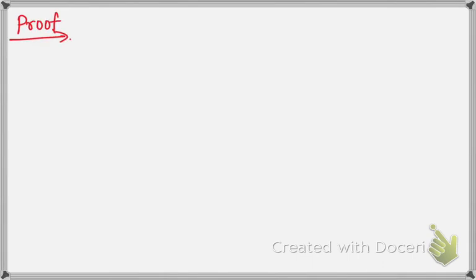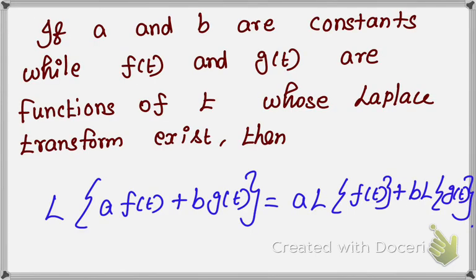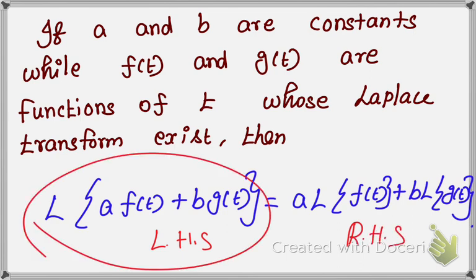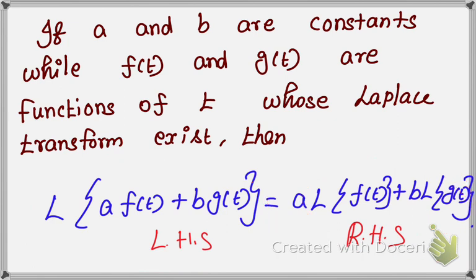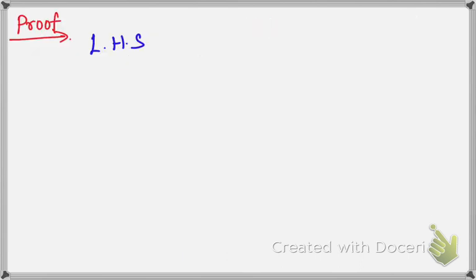Now we are going to prove that. Let's see the proof. First, you take the left hand side. In your equation, this is your left hand side and that is your right hand side. You choose the left hand side; the answer you have to obtain is on the right hand side. So we choose the left hand side equal to L of A·f(t) plus B·g(t).